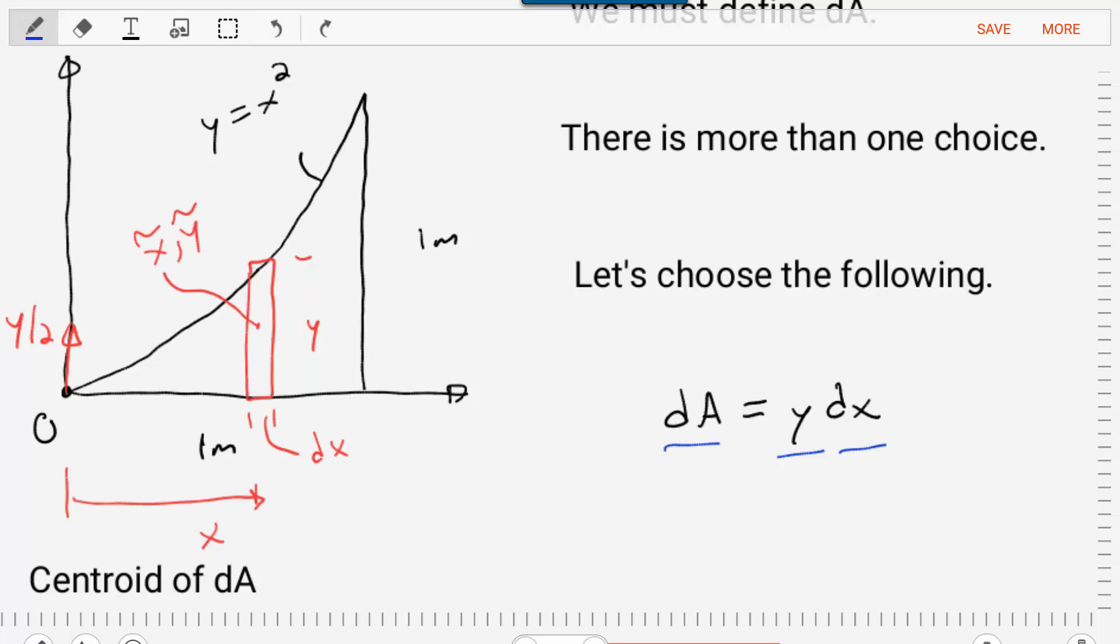Now, this was a choice that we made. There's another option that we could have selected. We could have made our differential area this way, where it would be one minus X times DY. It's going to make us have a much more complicated integration. So for this one, we choose the easier option, this element.